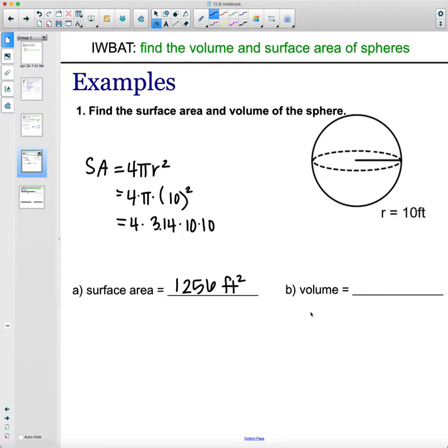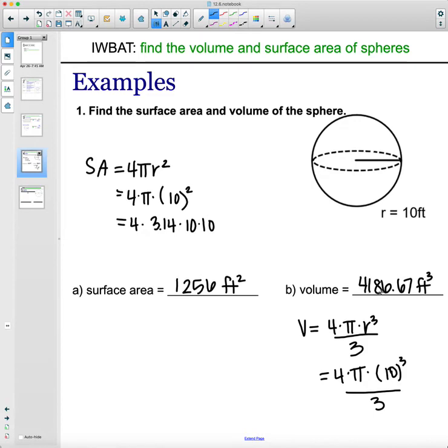And then volume is 4πr³ divided by 3. So 4π(10)³ divided by 3. Remember that 10 cubed would be three 10s. So you'll do 4 × 3.14 × 10 × 10 × 10, and then divide that by 3. Typing it into your calculator, you should get 4,186.67 feet cubed. Make sure you're typing it into your calculator right and getting that same answer.